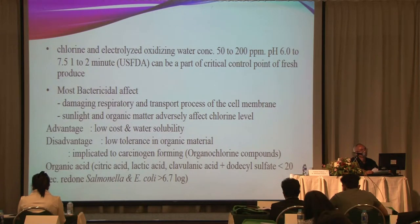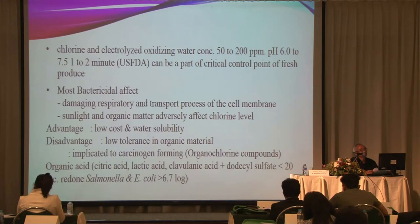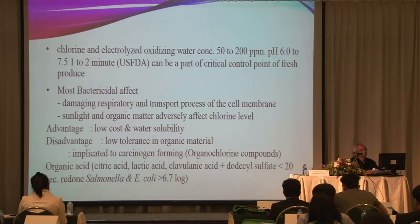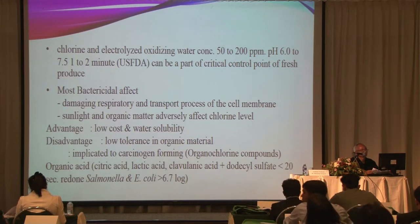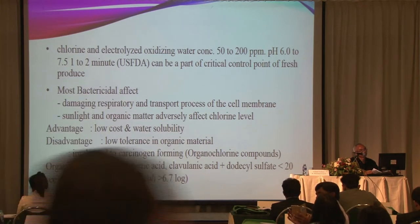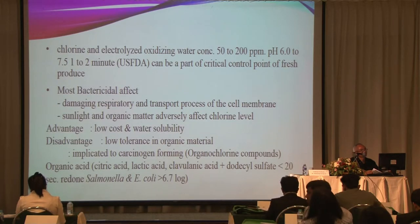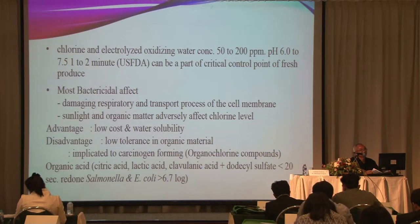The US FDA recommends using chlorine and electrolyzed oxidizing water at a concentration of 50 to 200 ppm at pH 6 to 7.5 for 1 to 2 minutes. This can be a part of the critical control point for fresh produce. Most bacteria will be killed by this chemical, which affects and damages the respiratory and transport process of the cell membrane. However, sunlight and organic matter adversely affect chlorine efficacy. Advantages of chlorine and electrolyzed oxidizing water: low cost and water solubility. Disadvantages: low tolerance to organic material, and implications for carcinogen formation in terms of organochlorine compounds.